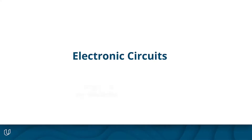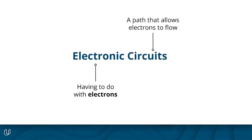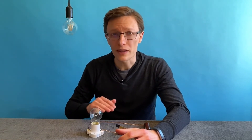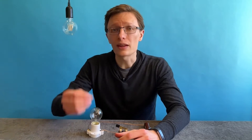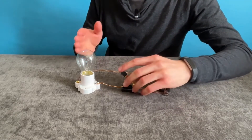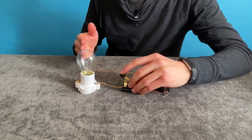Electronic simply means having to do with electrons, and a circuit is just a path that allows electrons to flow through it. In this lesson, we'll see that by creating a closed loop or circuit like the one you see here, we can generate a flow of electrons. It's this movement of electrons through a circuit that allows us to generate electrical energy. And by placing different components like this light bulb in the path of those moving electrons, we can use that electrical energy to do useful work.